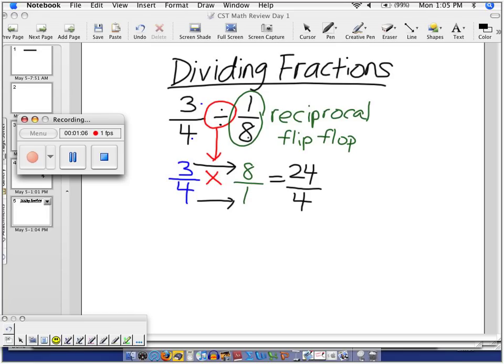That's an improper fraction. We need to change to a mixed number. 24 divided by 4 is 6. So, our final answer, if I can rewrite it: 3/4 divided by 1/8 is 6.